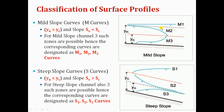If the depth of flow is in between the normal depth and critical depth, it comes in zone 2, giving M2 curve. If the depth of flow is less than both the normal depth and critical depth, it comes in zone 3, giving M3 curve. So for a mild slope channel, there are three curves possible: M1, M2, and M3.